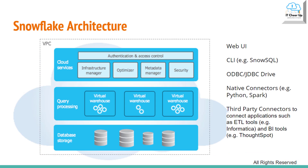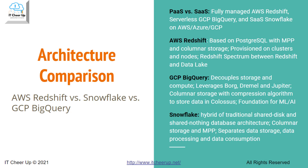Snowflake is a SaaS solution with zero management from end users. Its three-layer architecture separates data storage, data processing, and data consumption. Similar to shared disk architectures, Snowflake uses a central data repository for persistent data accessible from all compute nodes in the platform. It processes queries using MPP compute clusters where each node stores a portion of the entire dataset locally. It supports multiple ways of connecting to services such as web UI, command line, SnowSQL, ODBC, JDBC drivers, and native and third-party connectors. Here is the summary of the architecture comparison.